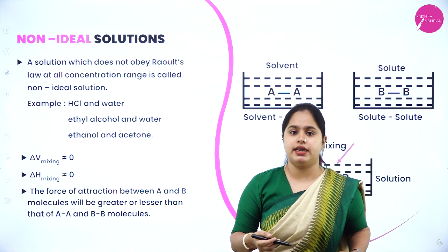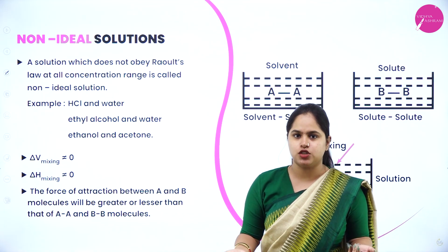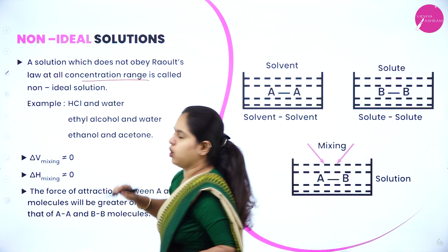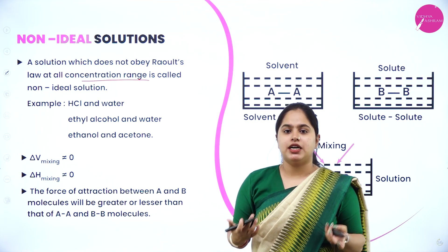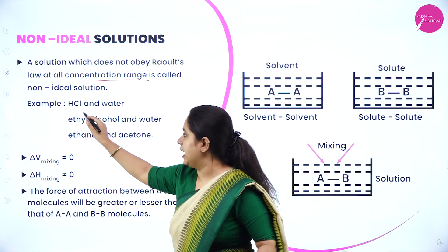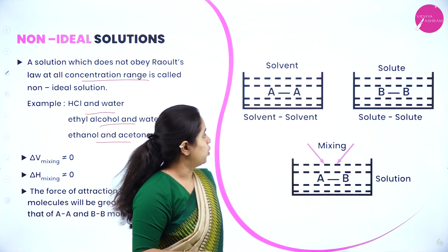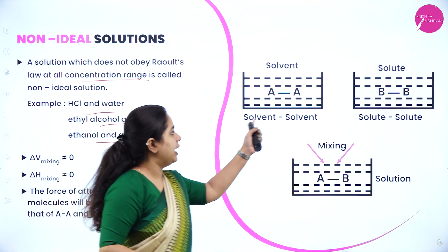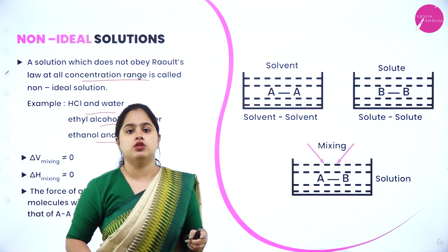Moving on to non-ideal solutions: a solution which does not obey Raoult's law at all concentration ranges is called a non-ideal solution. At certain concentrations it might obey Raoult's law, but not at all concentrations. Examples include HCl and water, ethyl alcohol and water, and ethanol and acetone.